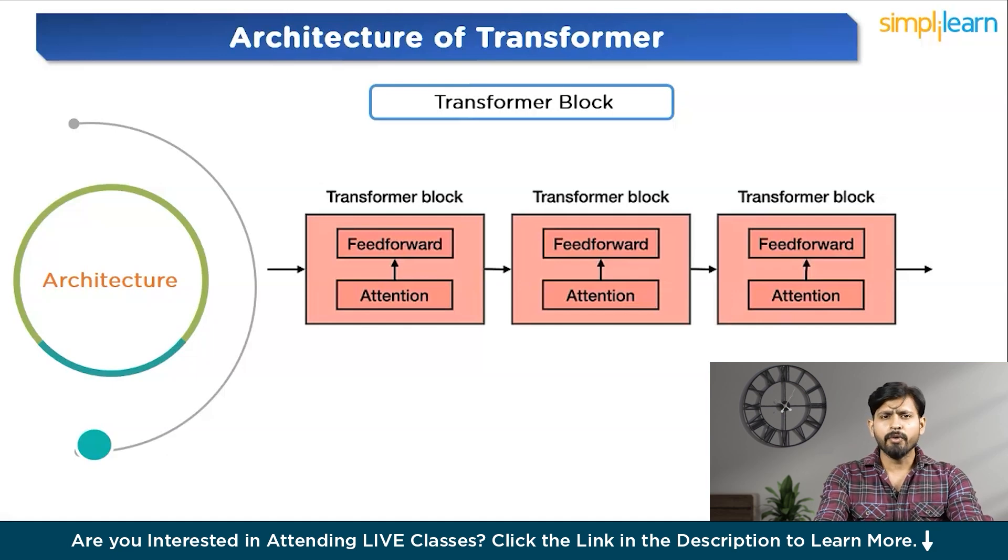Consider this scenario, you inquire what is the capital of Algeria? Ideally, the transformer would promptly respond with Algiers and move forward. However, since transformers are trained on vast data sets like internet, they might encounter incomplete or irrelevant information. For instance, following the question about the Algeria's capital, the subsequent sentence could be another inquiry like, what is the population of Algeria or what is the capital of Burkina Faso? Unlike humans who deliberate over responses, transformers simply mimic what they have learned from their training data without considering the appropriateness of their answers.